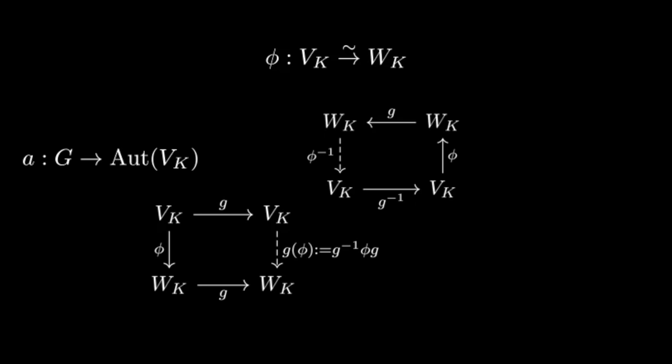We're very close to saying the following. Every twisted form corresponds to a map from G to the automorphisms of V_K. But we need to check that this is well-defined. In particular, we only cared about isomorphism classes of twisted forms, not the specific choice of isomorphism. So we would like the corresponding map from G to the automorphisms of V_K to not depend on the choice of isomorphism.